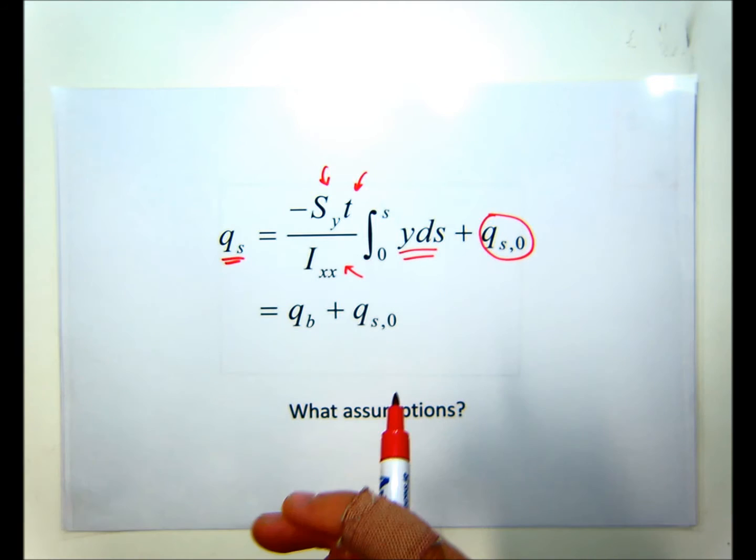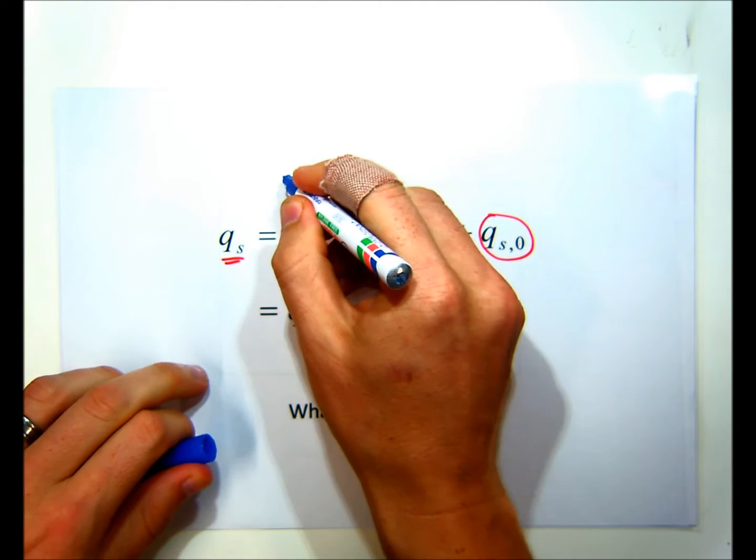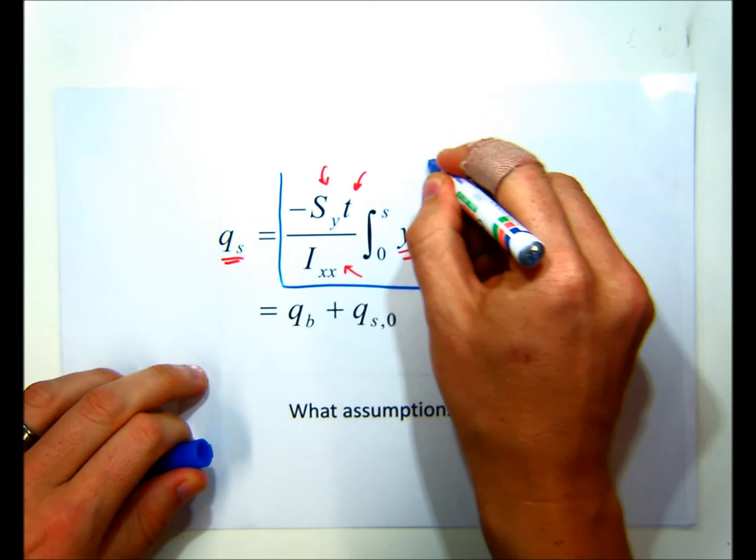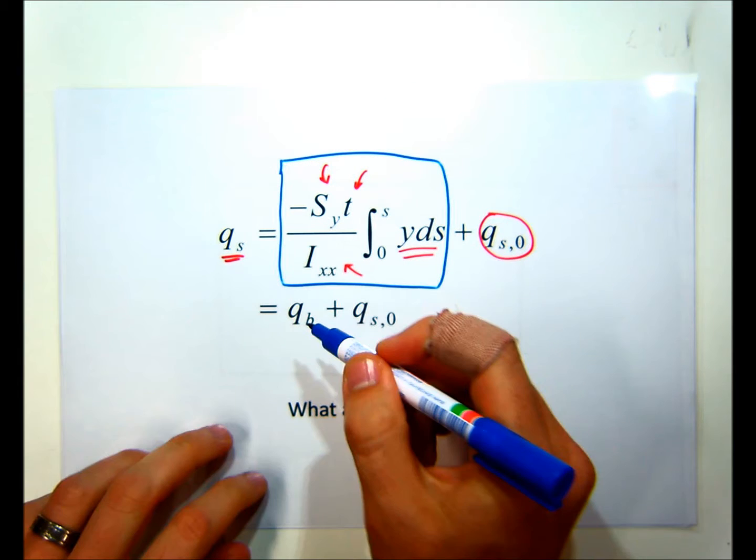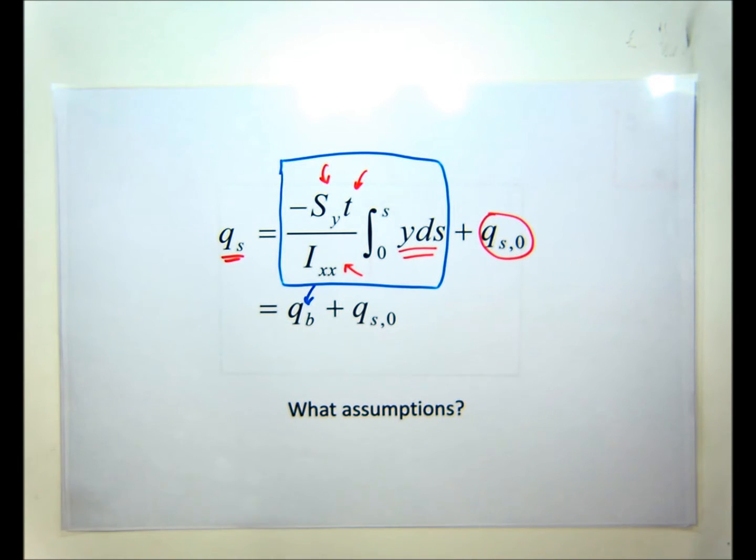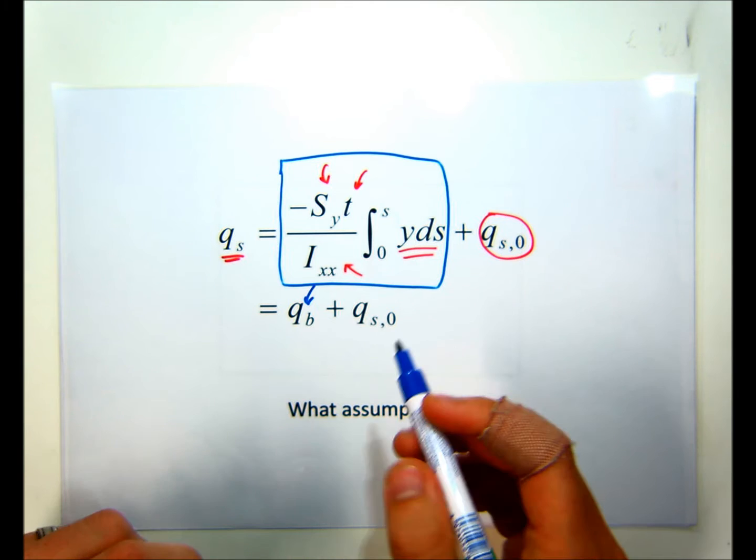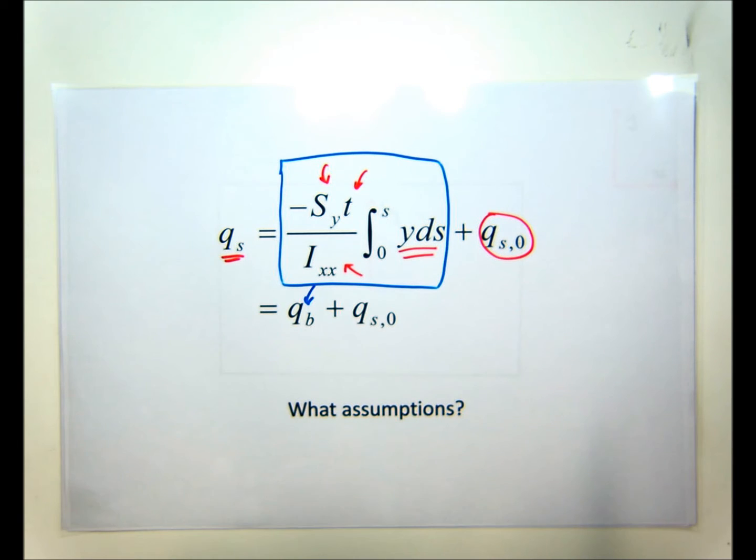So everything in this big term here, we're going to call QB, and that stands for basic shear flow. And we'll use this basic shear flow to then, at the end, calculate the constant shear flow. And once we have the constant shear flow and the basic shear flow, we'll add them together to work out the real shear flow in the section.